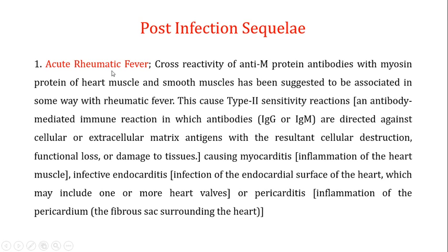What happens during acute rheumatic fever is what you call a type 2 sensitivity reaction. During this type 2 sensitivity reaction, there is an antibody-mediated immune reaction in which the antibodies are directed against cellular or matrix antigens of the host, with resultant cellular destruction and functional loss or damage to the tissue.